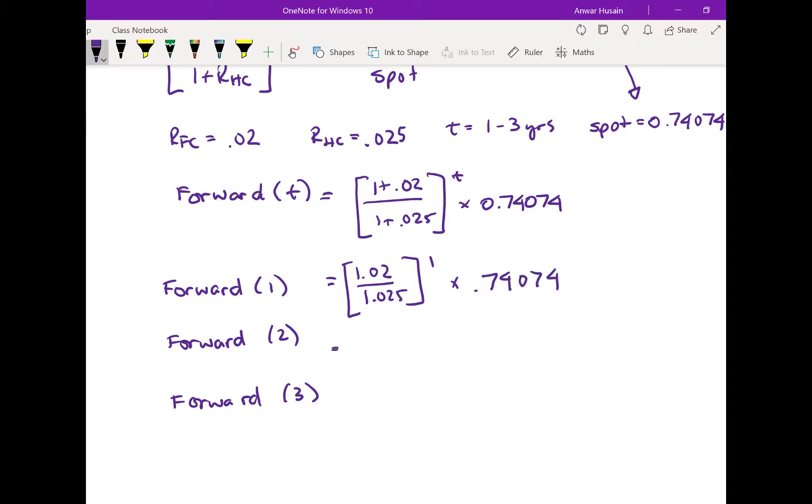The second one is going to be 1.02 over 1.025 to the power of two, times the same spot rate. And the third one is going to be as follows. It's the same thing to the power of three, times 0.74074.